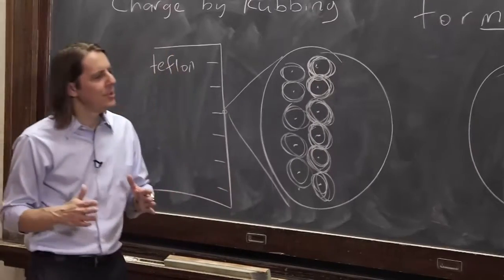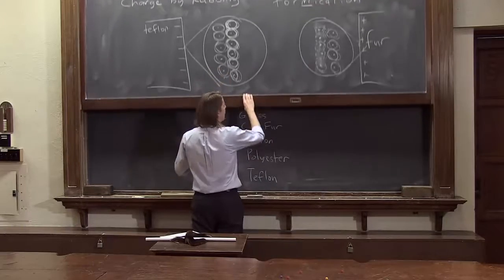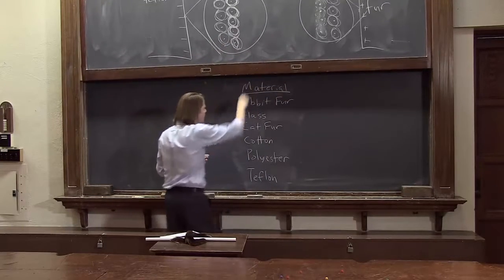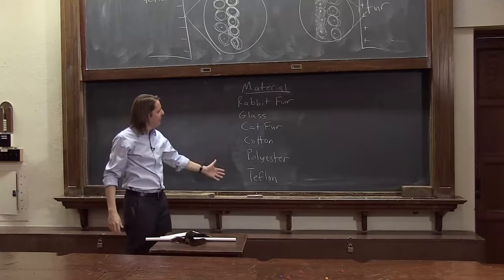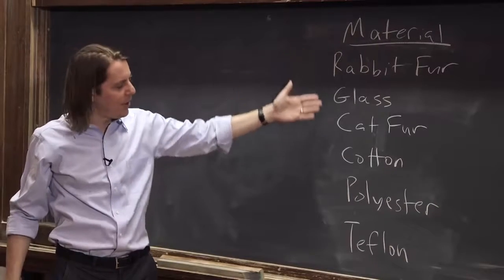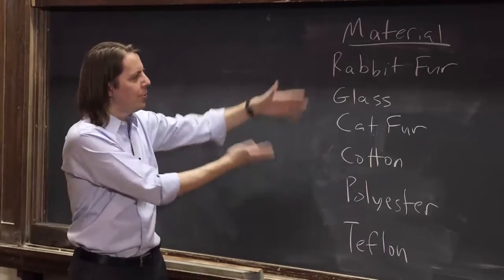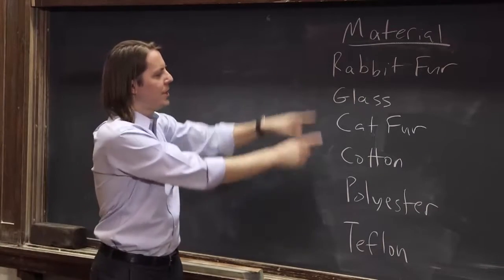However, people have been studying it for centuries, and what you do to study it is you make a table. So this is called a triboelectric series. It's a list of materials, and at the top are materials that tend to come out positive, and at the bottom are materials that tend to come out negative. So if you rub two materials on a triboelectric series, wherever they are on the table tells you what happens.